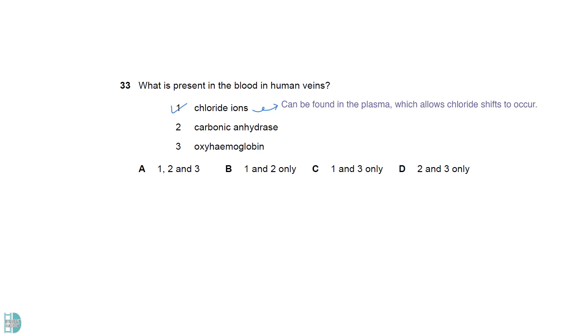Chloride ions can be found in the plasma, which allows chloride shifts to occur. Carbonic anhydrase is found in the red blood cells and catalyses the formation and dissociation of carbonic acid. Oxyhemoglobin forms when oxygen binds to hemoglobin. So, all three of them are found in the blood.